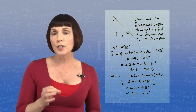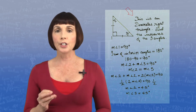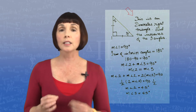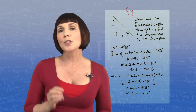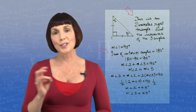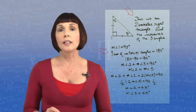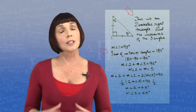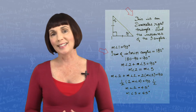To solve this problem, we used the definitions of a right and an isosceles triangle, and we also used the triangle sum theorem, which states that the sum of the interior angles in any triangle is 180 degrees.